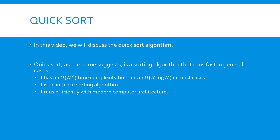Quicksort, as the name suggests, is a fast sorting algorithm in general cases. In the worst case scenario, it runs in O(n²) time. But it has an O(n log n) running time on average. Quicksort is also an in-place sorting algorithm. When properly implemented, the quicksort algorithm can run efficiently in practice.